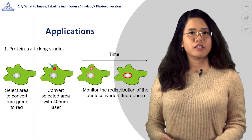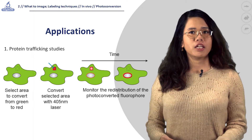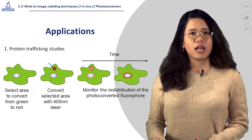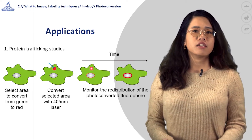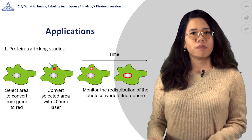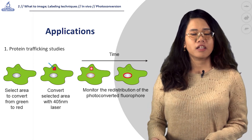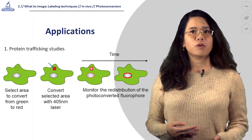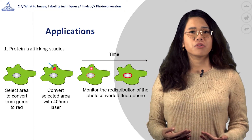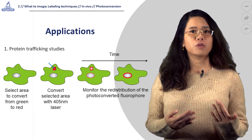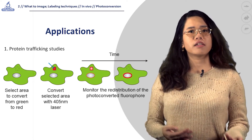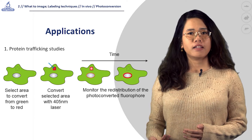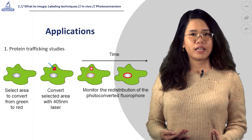These proteins can be imaged in their native emission state prior to photoconversion, making it easier to identify and select regions for optical highlighting. Thanks to their properties, photoconvertible proteins are useful tools for protein trafficking studies, as well as cell lineage analysis and in vivo cellular tracking.